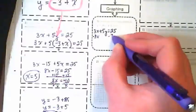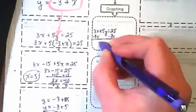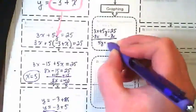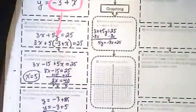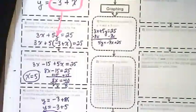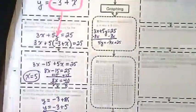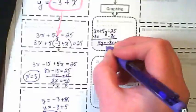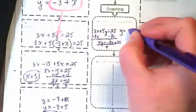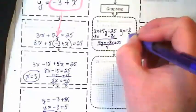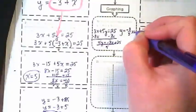First thing we're going to do is get the 3x moved. Then we're going to divide everything by 5, and we end up with y equals negative 3 fifths x plus 5.